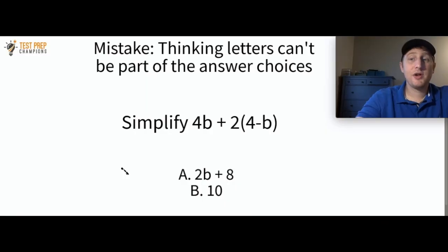Sometimes students get a little confused and they think that operation symbols like addition and subtraction cannot be part of the answer choices. And this can lead them to combining letters and numbers the wrong way. So here's a simple example just to make the point. Simplify 4B plus 2 times 4 minus B. And the answer here is A. But the point I want to make is that some students might look at answer choice A and see that it has a letter in it and think that that can't be the right answer. So don't make this mistake here.